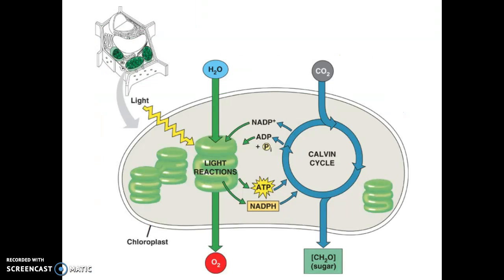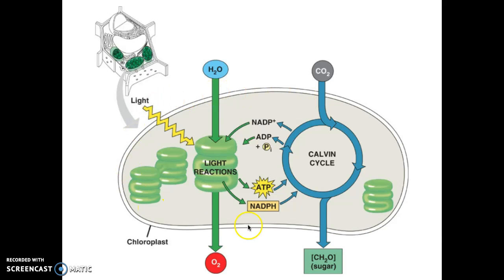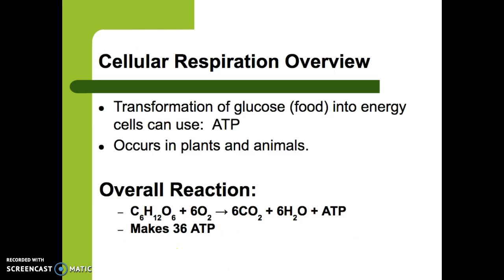One more quick look: there are two major reactions that make photosynthesis happen. Light hits the chloroplasts — this is where the light-dependent reaction happens, where water gets converted into oxygen. Then it goes into the second reaction, the light-independent reaction, which happens in the cytoplasm — this is where sugar is made. Now let's look at cellular respiration.